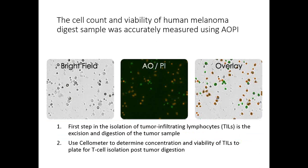We'll look at examples of different cell types that can be counted using the cellometer during ACT development. The first is a Human Melanoma Digest sample — cancer tumor samples collected from the patient. At this step, you isolate tumor cells and look for antigen-specific receptors or antigen-presenting antibodies on the tumor. We isolate tumor infiltrating lymphocytes, digest the tumor sample, and use the cellometer to measure the viability and concentration of the TILs or the tumor itself, staining with AO/PI.